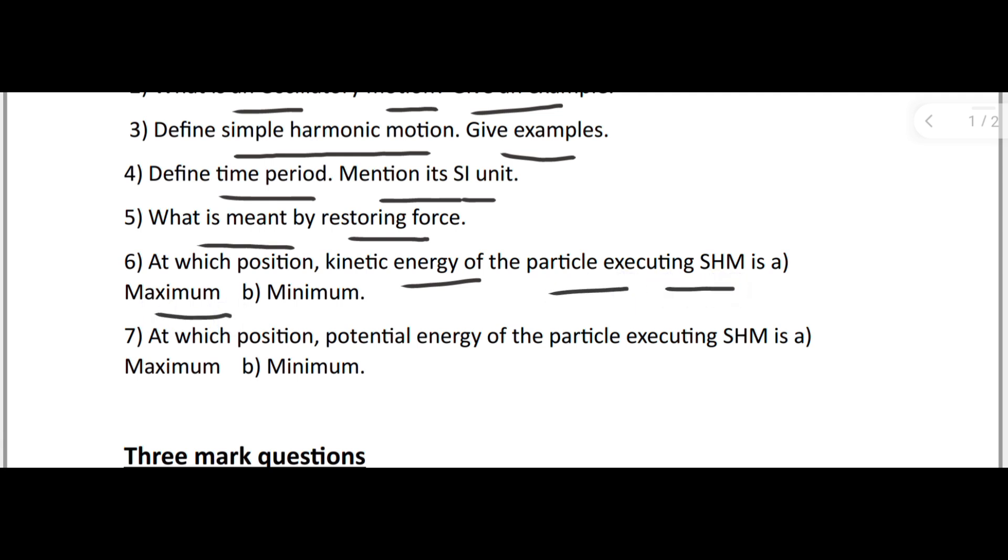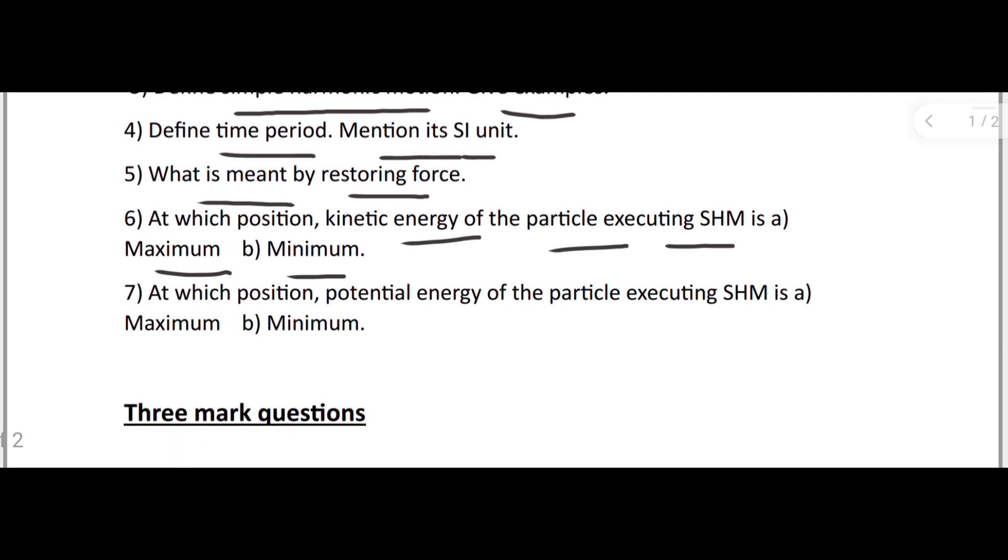Next one is: At which position, kinetic energy of the particle executing SHM is maximum and minimum? You have to write the condition, means position of a particle in SHM you have to explain that. And at which position, the potential energy of a particle executing SHM is maximum and minimum? That is also you have to write.